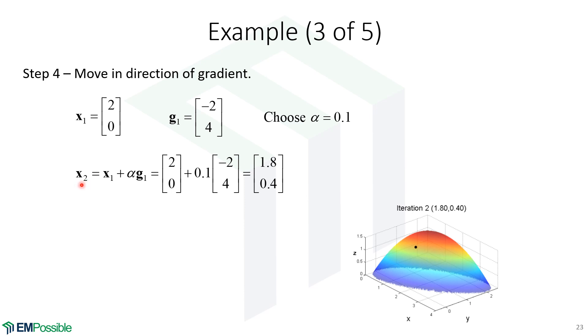So we'll calculate our next point, x2, as our first point plus this alpha parameter times the gradient. And so we have all the numbers now. We can calculate our second point. So remember, our first point was down here somewhere. The gradient pointed in this direction. And we moved this distance. This is now our second point.